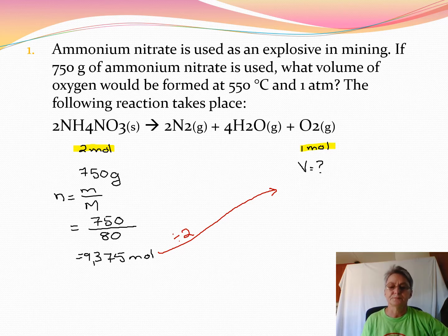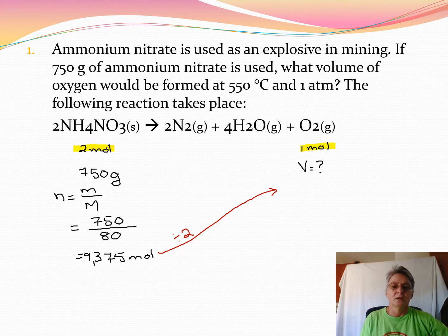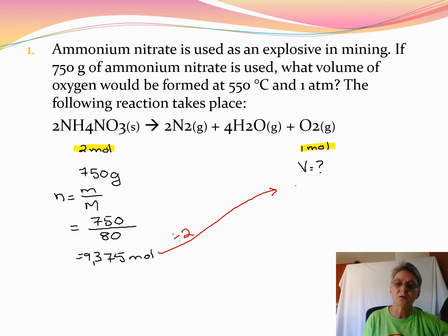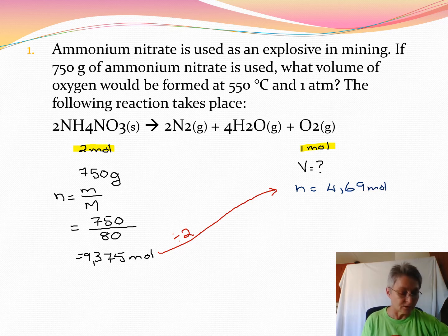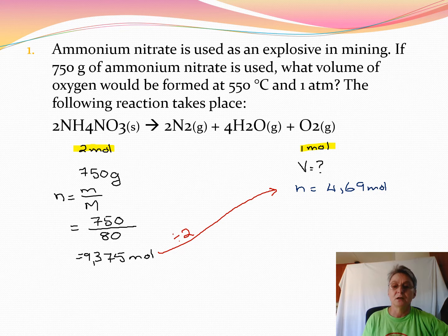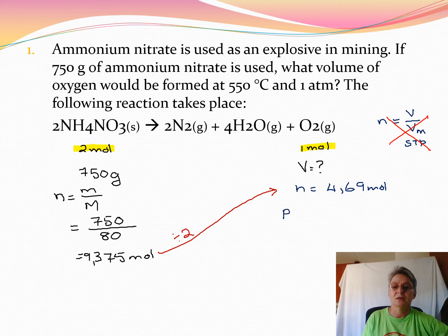We divide 9.375 by 2 and we get the moles of oxygen as 4.69 moles. I can't use n equals V over Vm because it's not STP conditions, so we can't use that equation. We need to go to our ideal gas equation.